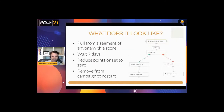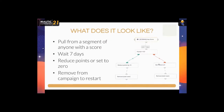So how does this look in MAUTIC? You pull a segment of anybody who has a score, then wait seven days before dropping their score by 10 points. If they have less than 10 points, set them to zero; if more, reduce by 10. Then remove them from the campaign — they start back at the top because they still have a score, wait seven more days, and repeat. This systematically drops the score by 10 points every single week.